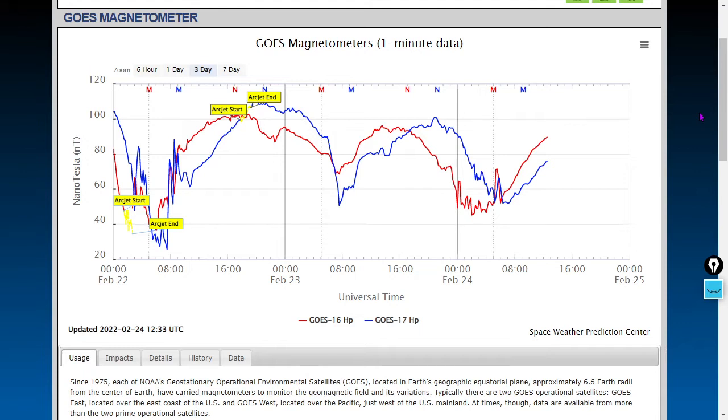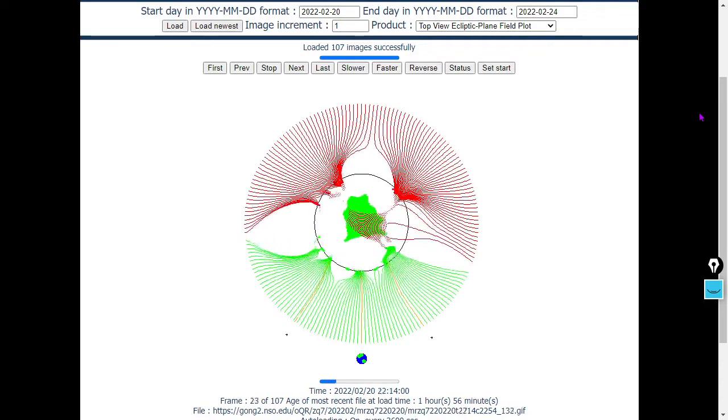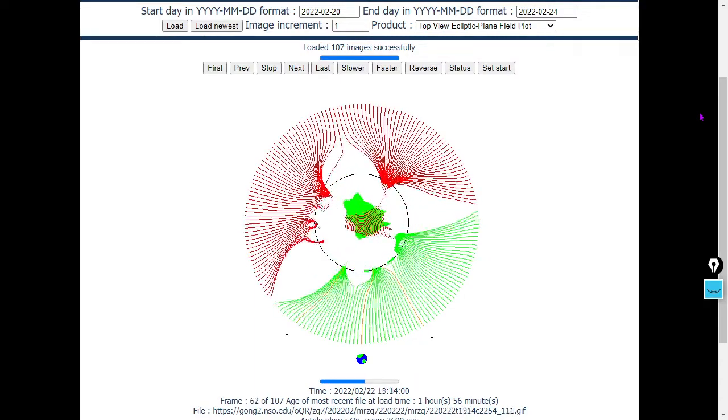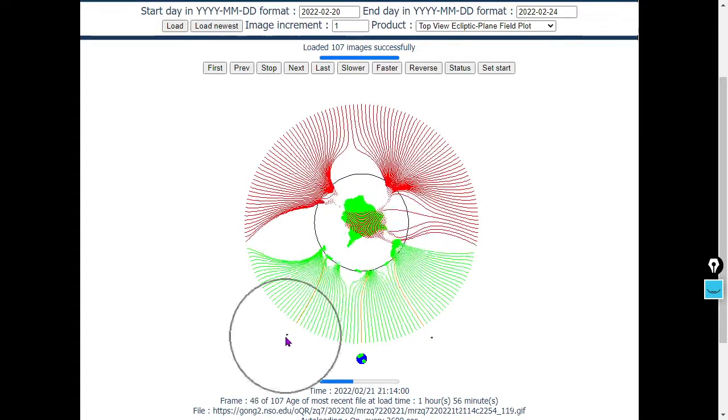Next, we'll look at the heliospheric current sheet since there's a bit of a magnetic tug of war happening in the east side of the sun. Here's a great view of this, the top view ecliptic plane field plot, part of the National Sunspot Observatory.